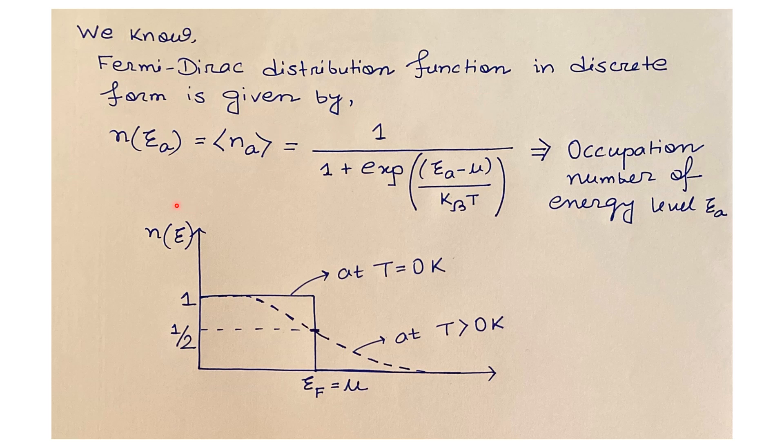the average number or the occupation number of the particles at the energy level Ea is n(Ea) equals 1 over 1 plus exponential of (Ea minus μ) by kBT, where μ is the chemical potential.